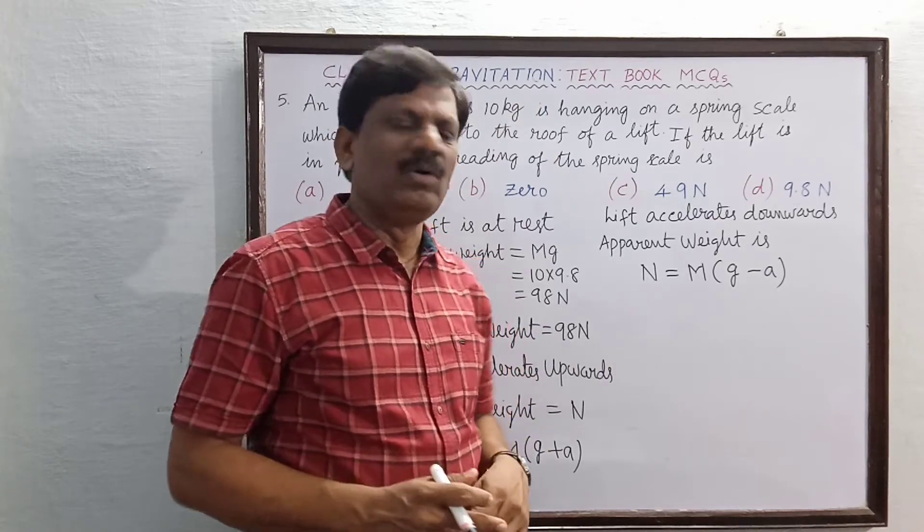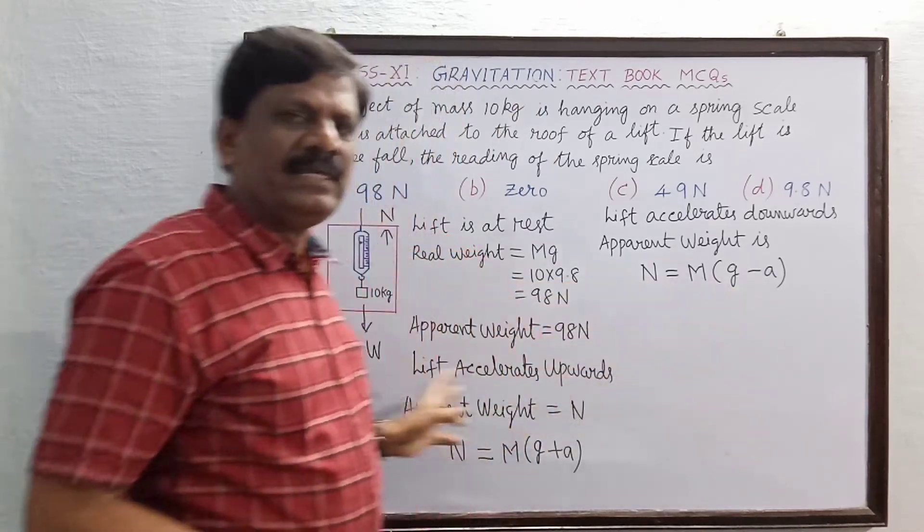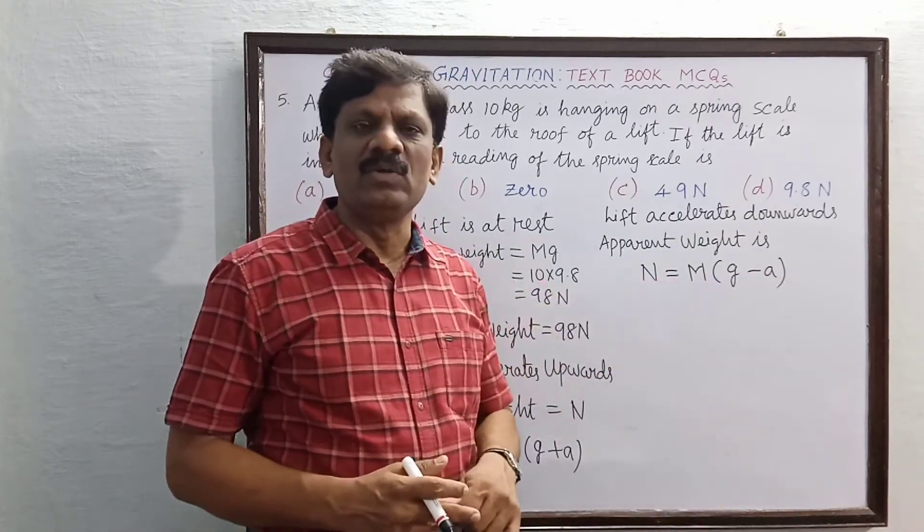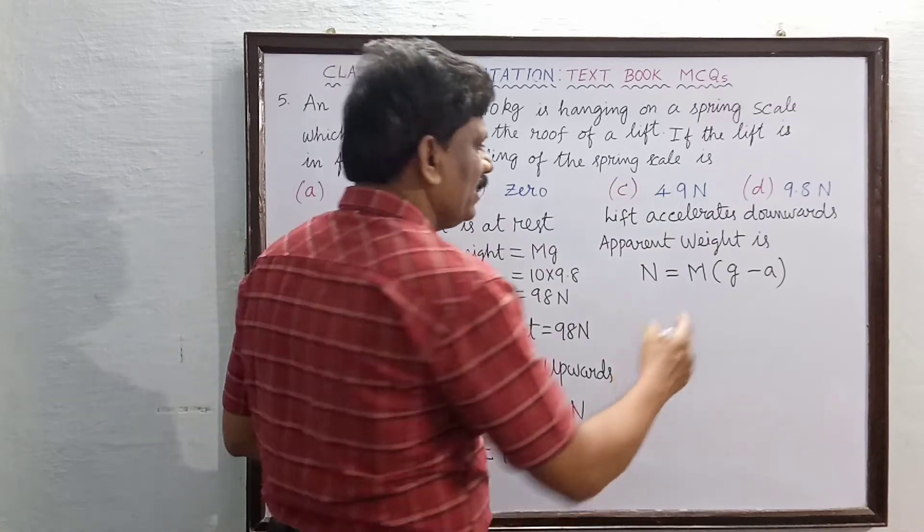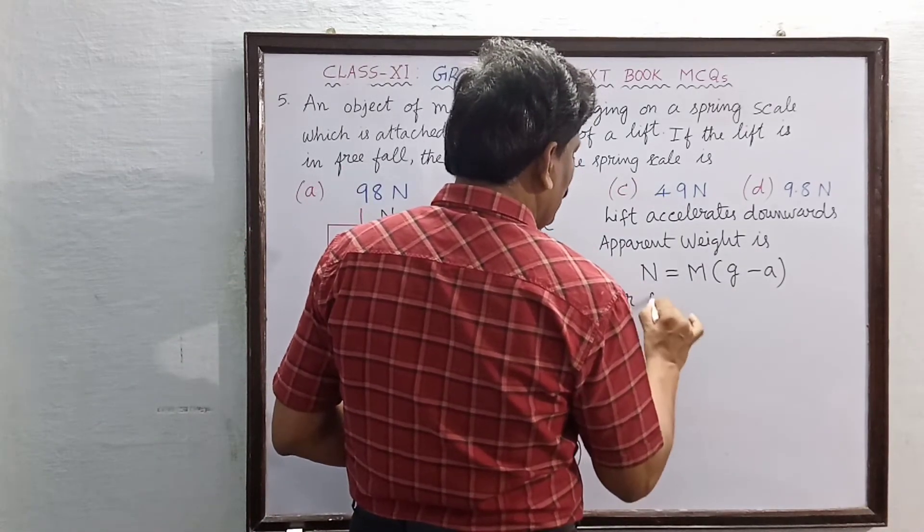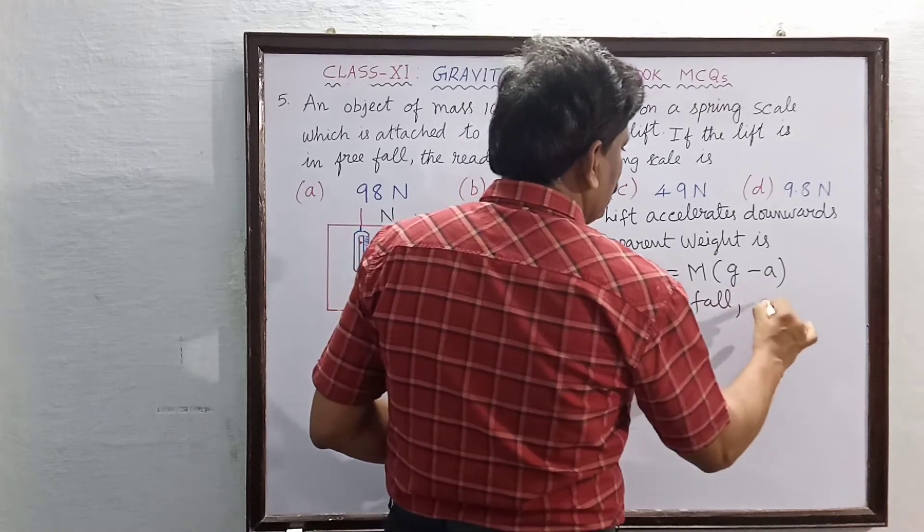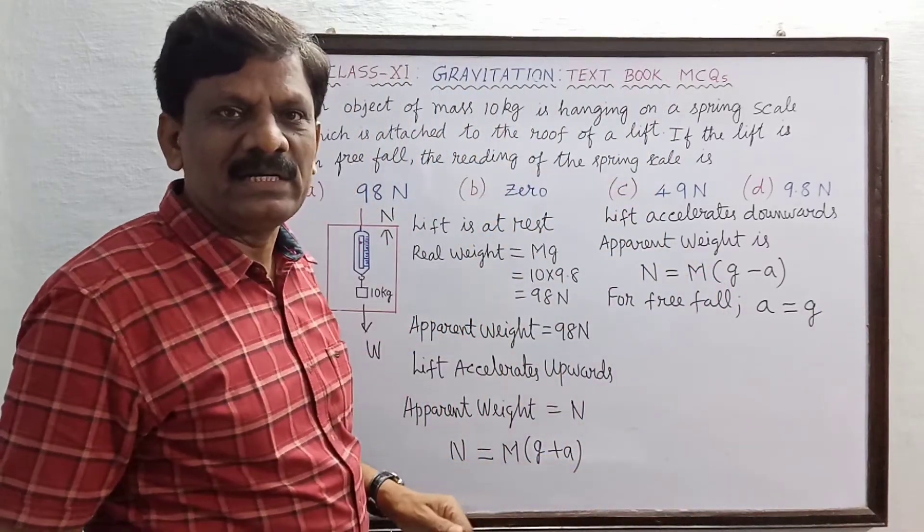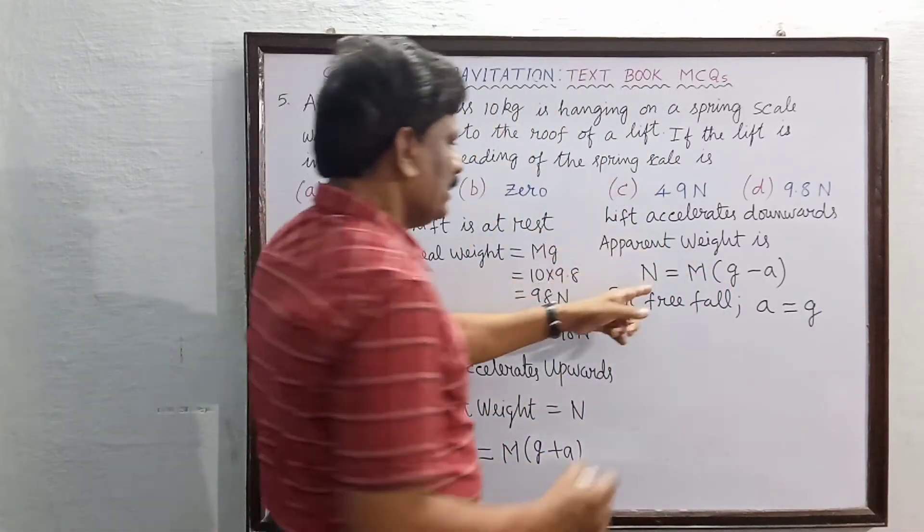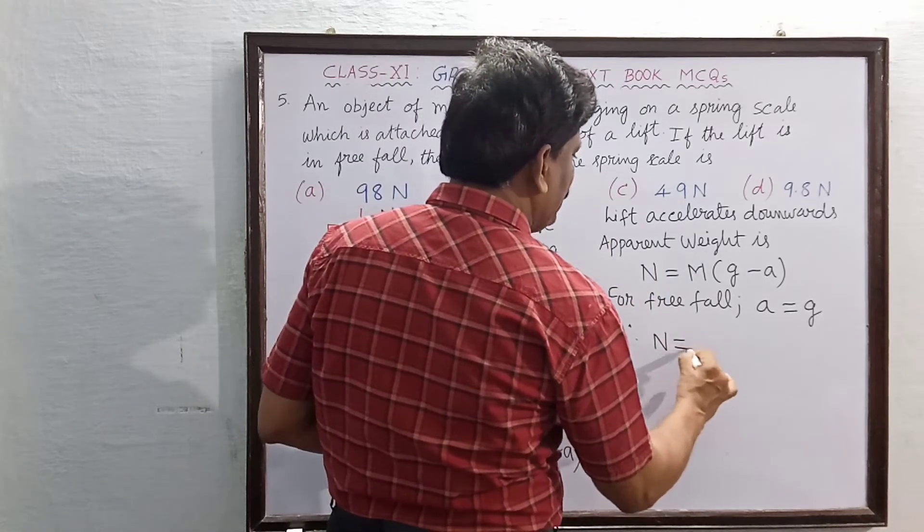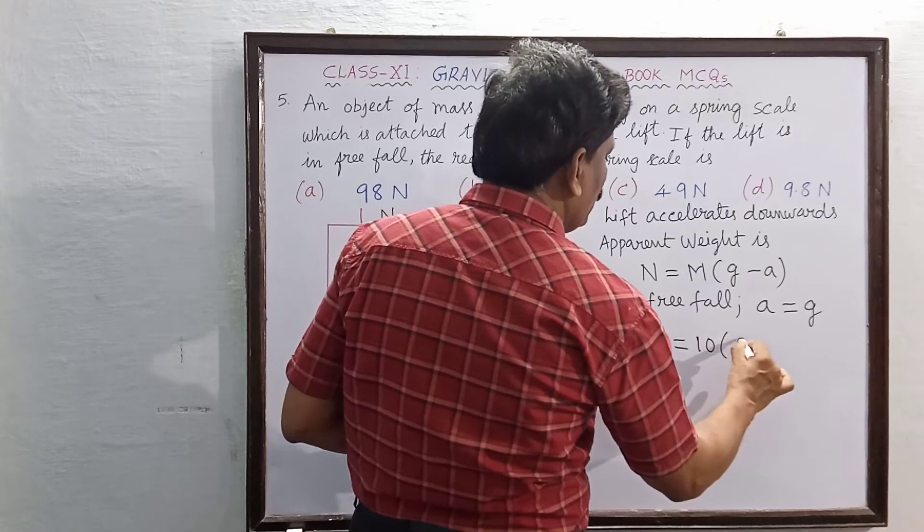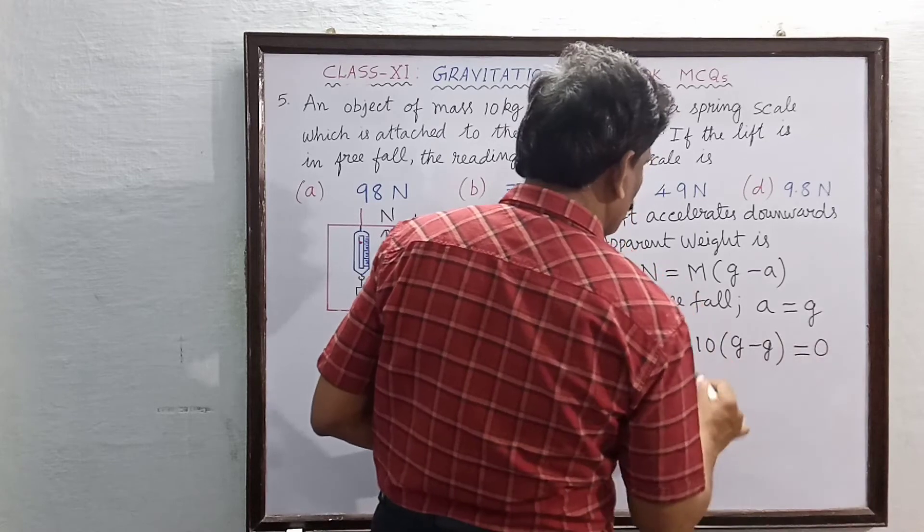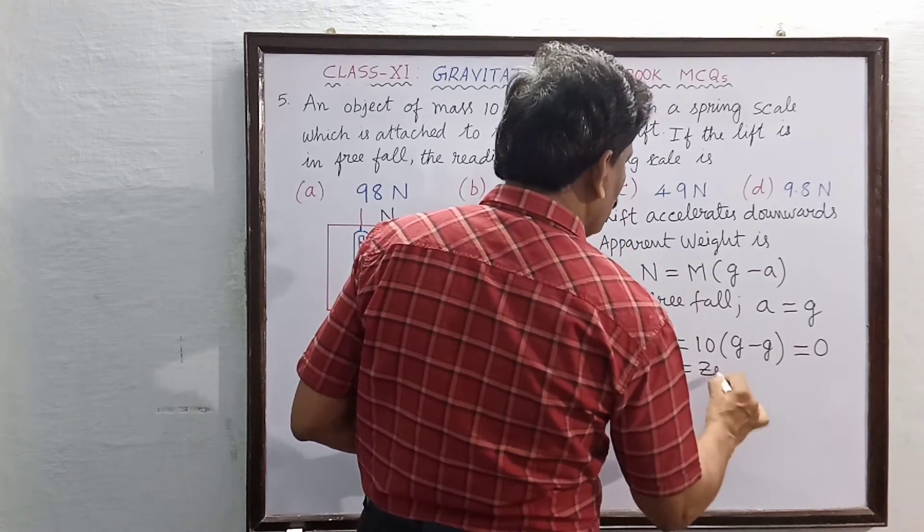What do we get? The acceleration of the 10 kg mass is equal to g. The acceleration of the lift is also equal to g. For free fall, the acceleration of the lift is equal to g. Therefore, N is equal to 10 kg into g minus g. That is equal to 0. Therefore, N is equal to 0.